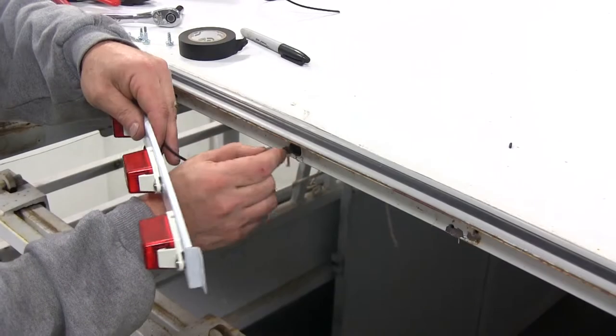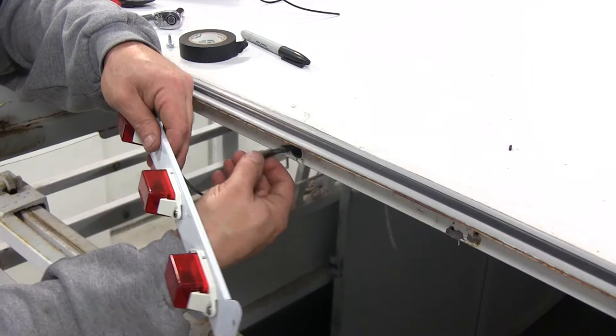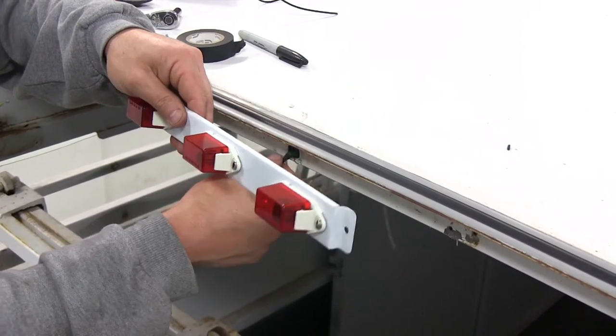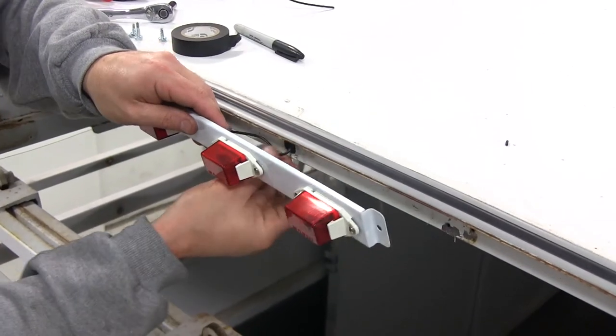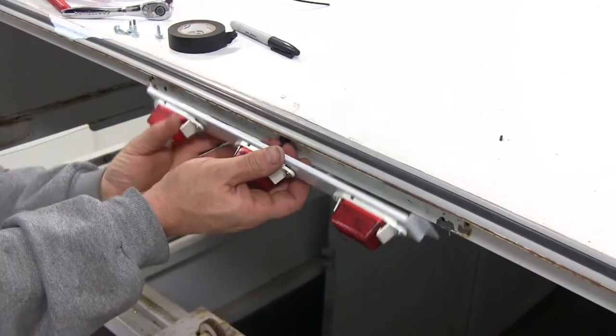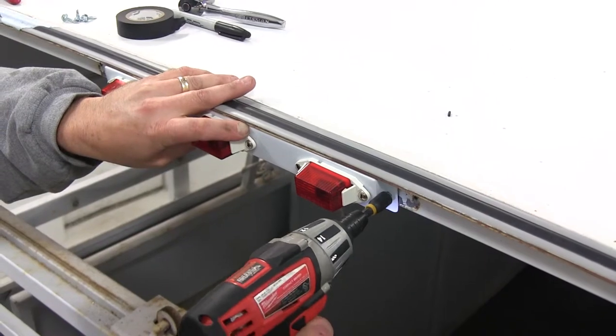We'll then feed our wire back in through the hole here. We'll make sure any excess wire is not crimped or pinched as we put the light bar up into position. And then we'll reinstall our two self-tapping screws that we used to pre-drill the holes.